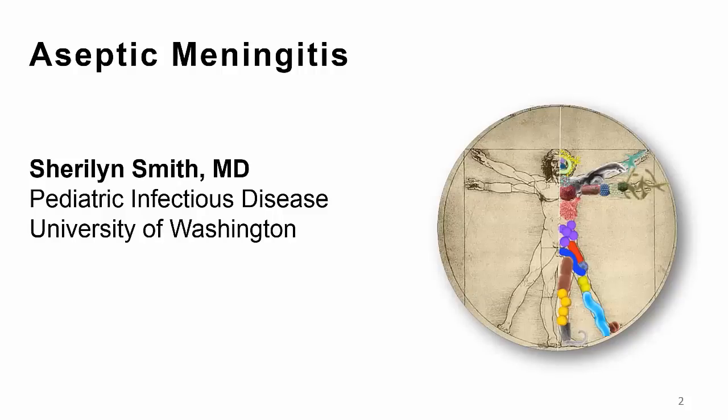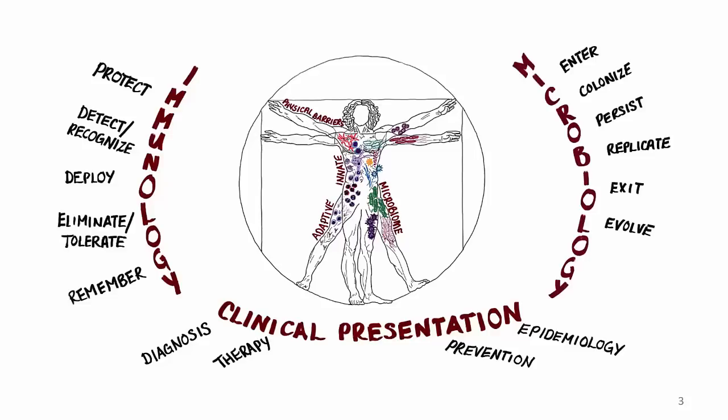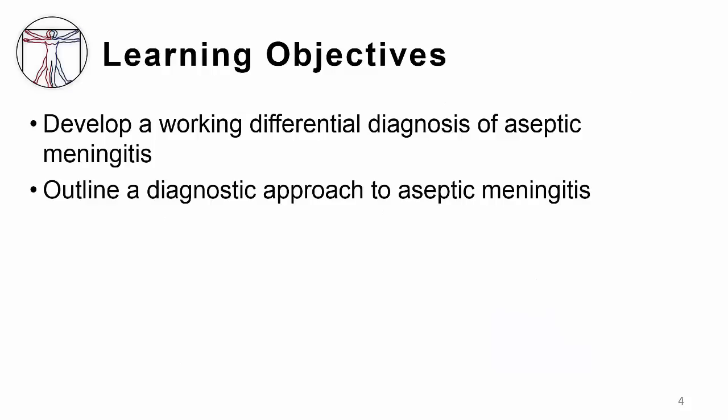Today we're going to talk about aseptic meningitis, which is a very common clinical syndrome. You will see this wherever you practice in the world. This particular clinical syndrome also teaches us to be comfortable with uncertainty because there are so many different causes of aseptic meningitis. We're going to be focusing on the clinical syndrome, primarily the epidemiology as well as the diagnosis. The learning objectives for this video are to develop a working differential diagnosis for aseptic meningitis and outline a diagnostic approach to aseptic meningitis.